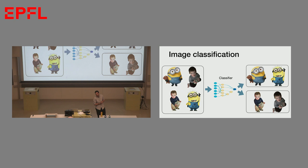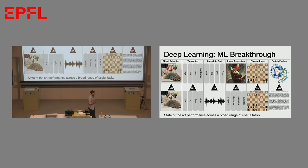Another problem is image classification. Imagine you have a bunch of images — some images of minions, some images of babies. You want to classify them: given a new picture, is it a baby or a minion? This is what we are interested in, and of course there are a lot of other applications which rely on classification, machine learning, and neural networks.